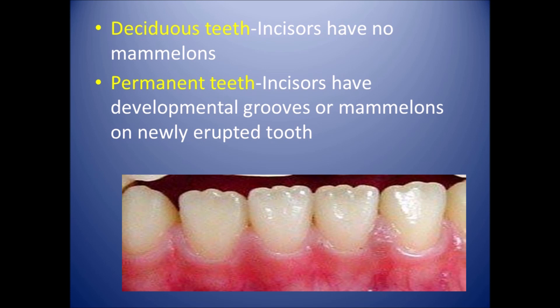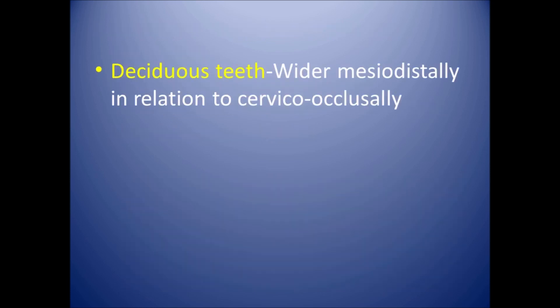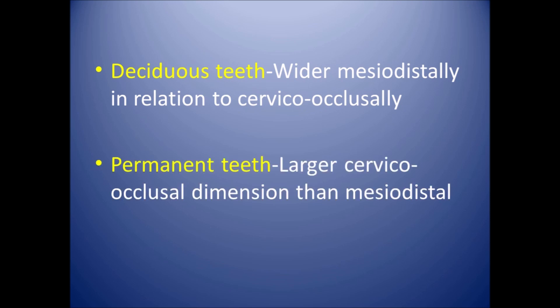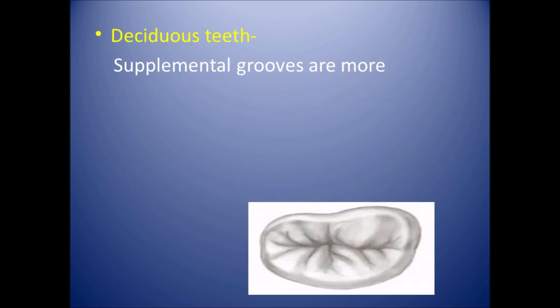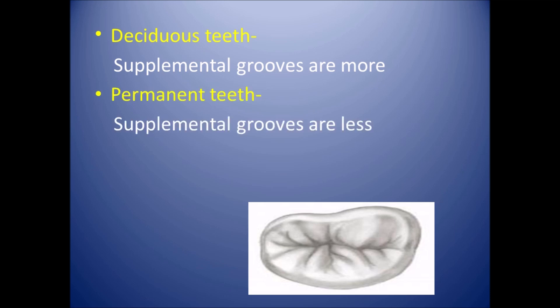This picture shows newly erupted permanent incisors with mamelons. Deciduous teeth are more wider mesiodistally in relation to cervical-occlusal dimension. In permanent teeth, the cervical-occlusal dimension is more than the mesiodistal dimension. Deciduous teeth also have more supplemental grooves as compared to permanent teeth.